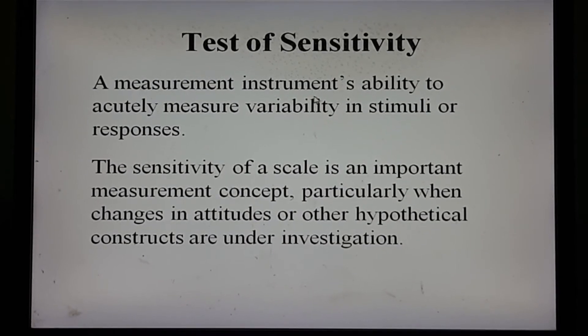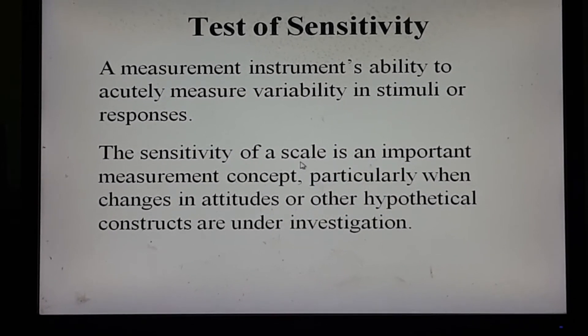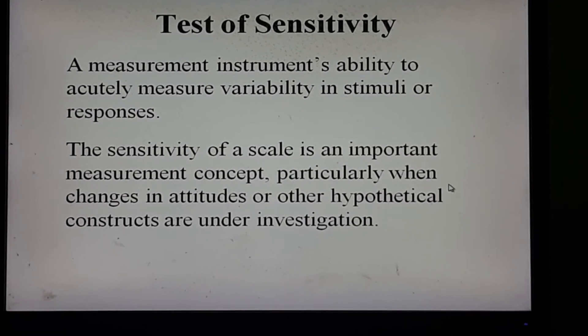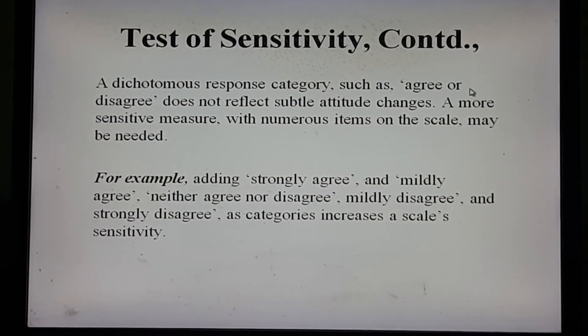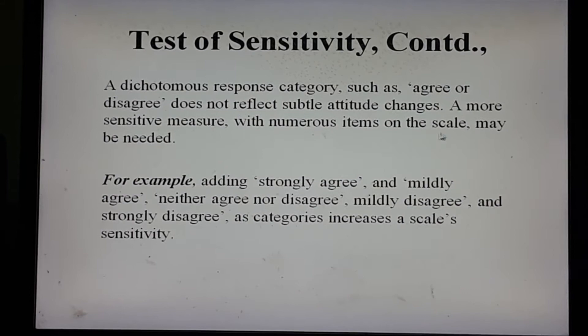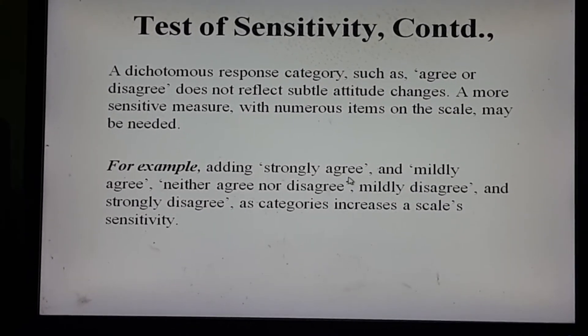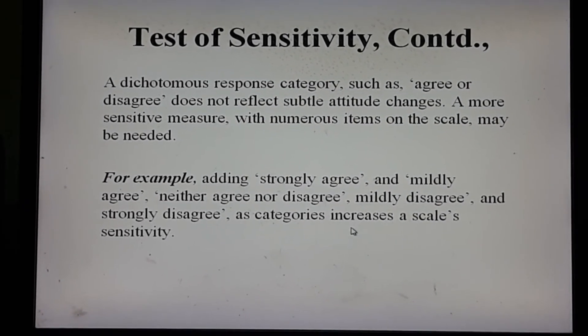The third criterion for good measurement is the test of sensitivity. A measurement instrument's sensitivity is its ability to accurately measure variability in stimuli or responses. The sensitivity of a scale is an important measurement concept, particularly when changes in attitudes or other hypothetical constructs are under investigation. A dichotomous response category such as agree or disagree does not reflect subtle attitude changes. A more sensitive measure with numerous items on the scale may be needed — for example, adding categories like strongly agree, mildly agree, neither agree nor disagree, mildly disagree, and strongly disagree increases a scale's sensitivity.